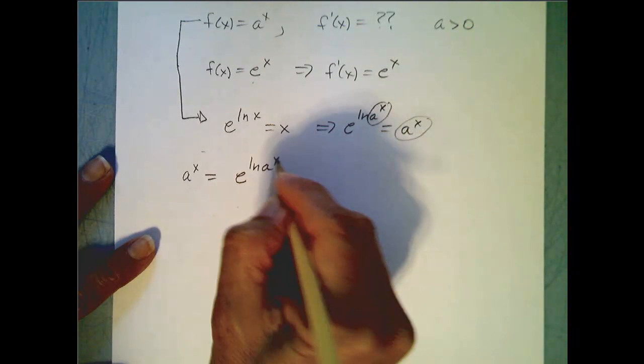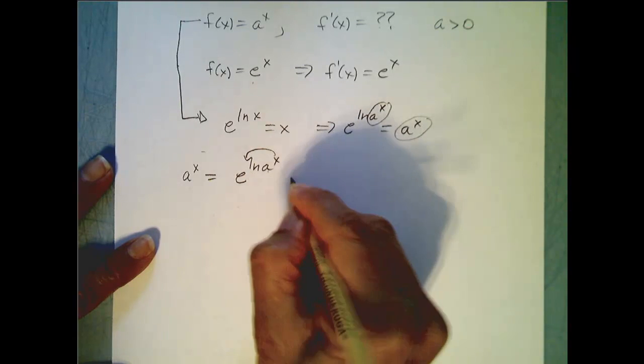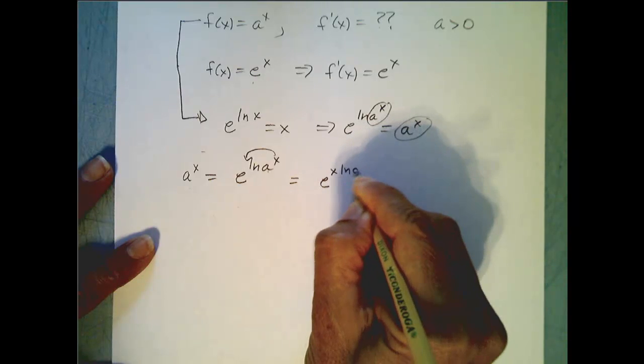Now we are going to use the properties of logs, and so we have natural log of a to a power, we can bring that power down in front. So this is e to the x times ln of a.